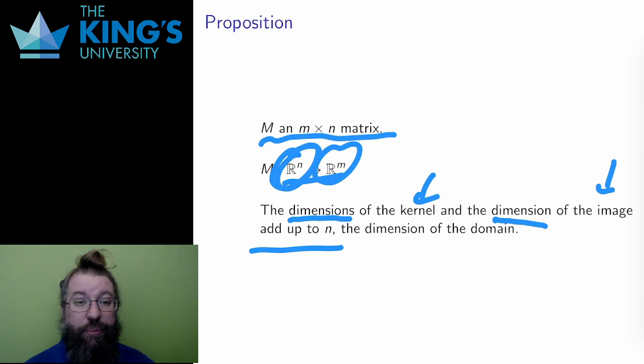These are dimensions that are lost, destroyed, collapsed. The proposition says that the output, the image, has all the remaining dimensions. Whatever is left over is kept, is sent to the image. If I start in a four-dimensional space and lose one dimension in a projection, then I have three dimensions left, and the output will be a three-dimensional subspace of its target. And hopefully that makes some intuitive sense.